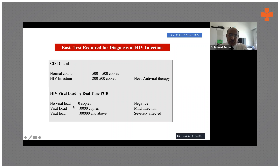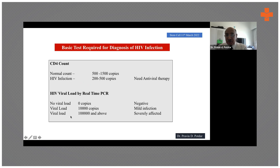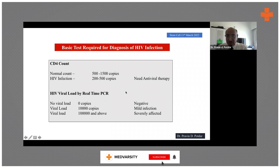The second assay, which gives the exact number of viral copies in the body, is real-time PCR. This assay was developed in Jaslok Hospital in 2006 — at that time nobody knew about real-time PCR. Now, because of COVID, even children know what real-time PCR is and what a CT value means, though viral load is less commonly discussed.